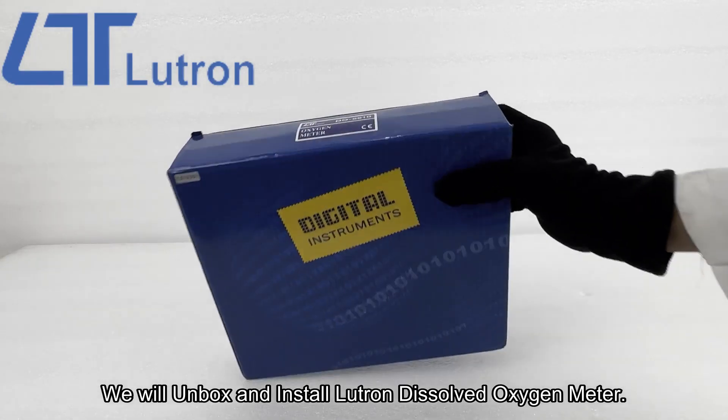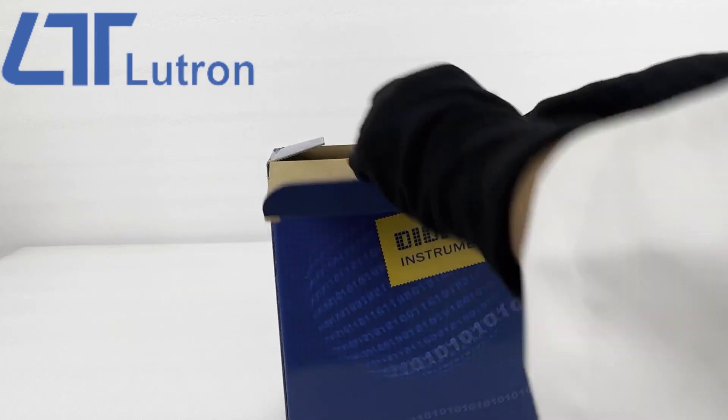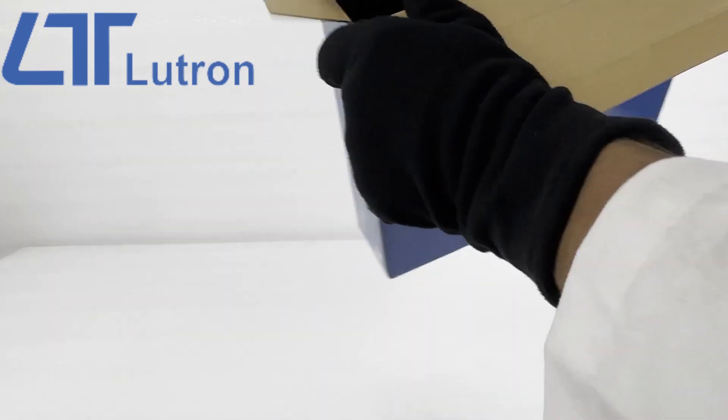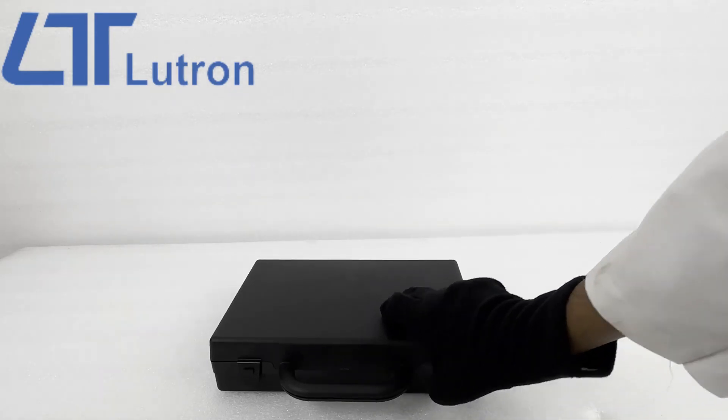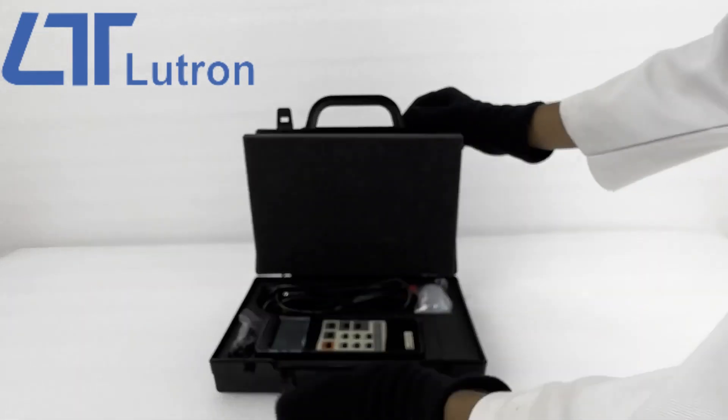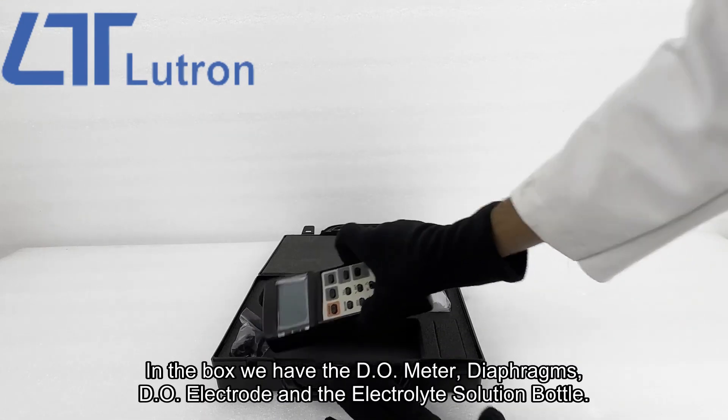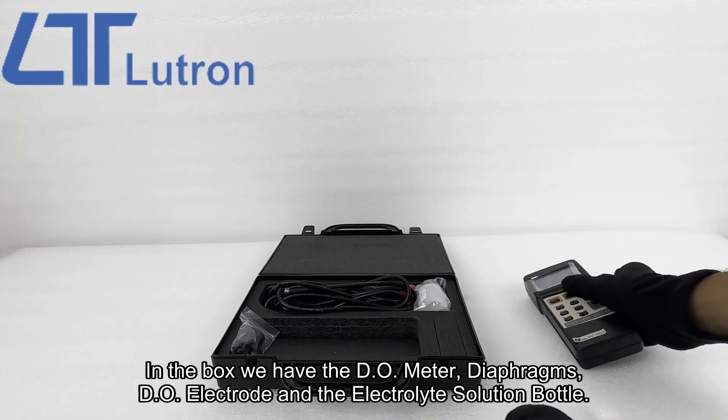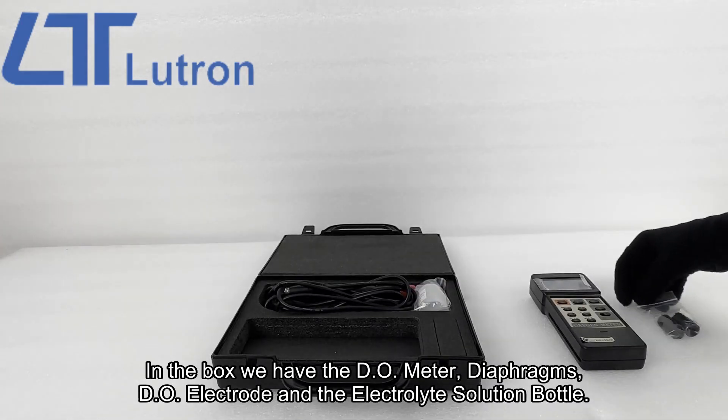We will unbox and install the Lutron dissolved oxygen meter. In the box we have the DO meter, diaphragms, DO electrode, and the electrolyte solution bottle.